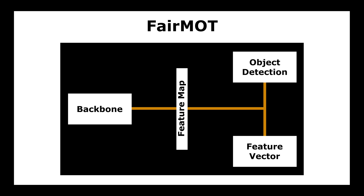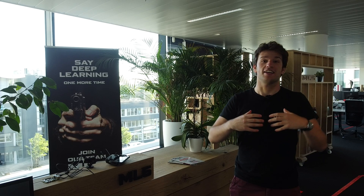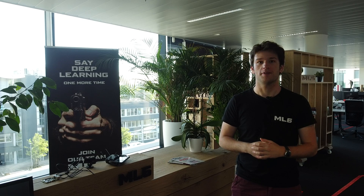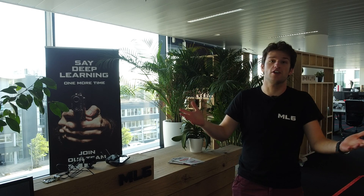Because we now generate the feature vector straight from the object detector's backbone, it's not only more efficient, but we can tweak the model even further to generate larger and much better feature vectors. Once we have both the bounding boxes and the feature vectors of each box, we can then use the exact same method as in DeepSORT to get our final tracker. This is Victor from ML6, a Belgian machine learning company. Hopefully you've had as much fun learning about object tracking as I had making the video. There's a lot more to come — we're going deep into the code of each of these trackers in an upcoming video, and there's a lot more fields in machine learning left to cover. See you in the next video from ML6.